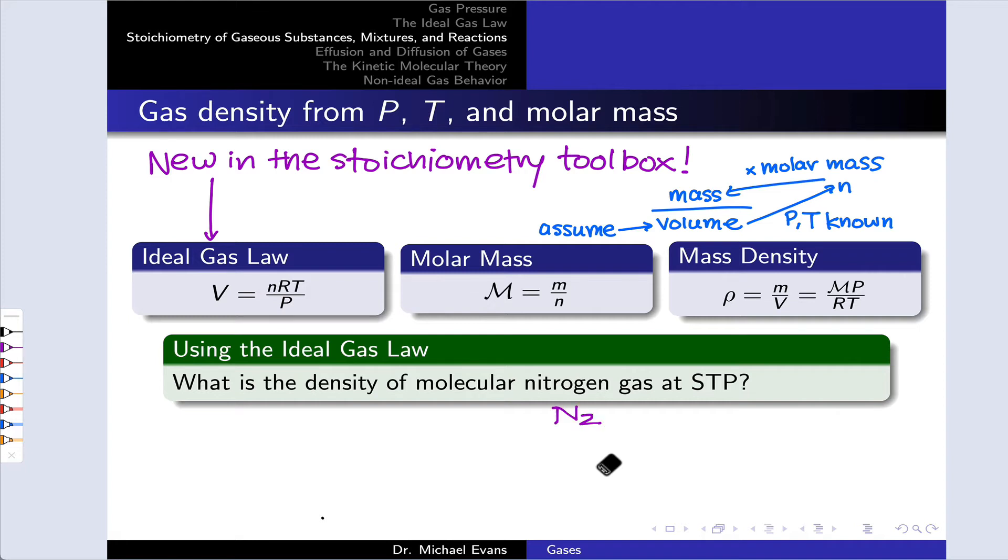N2 gas has a molar mass of 28 grams per mole approximately. STP tells us the temperature and pressure, one atmosphere and 273.15 Kelvin.